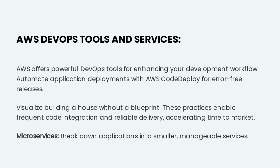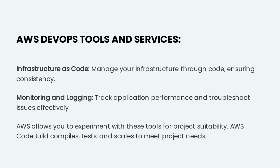Microservices break down applications into smaller, manageable services. Exploring AWS DevOps tools and services further, you'll find that infrastructure as code allows you to manage your infrastructure through code, ensuring consistency. Monitoring and logging enables you to track application performance and troubleshoot issues effectively.